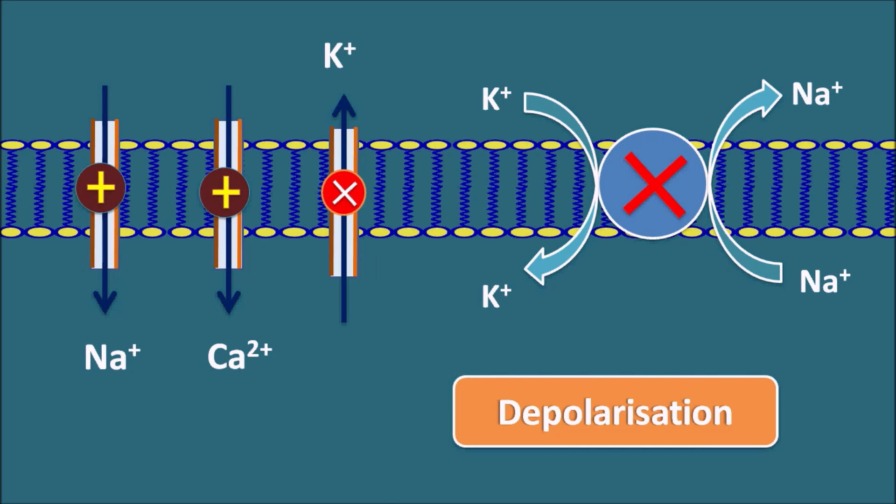By taking an ECG, we can estimate what is the function of this cardiac membrane and how it is going to be depolarized. If it is excessively depolarized, we can easily observe it in the ECG by an elevated QT interval. It should be immediately treated, otherwise it may lead to fatal cardiac arrhythmias.